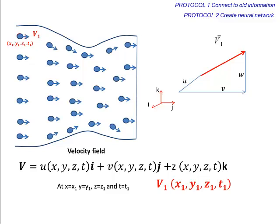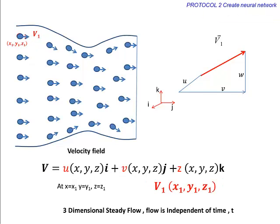In general, fluid motion is a very complex phenomenon and the velocity field is a function of all three space variables and time. Such flows are called 3-dimensional and unsteady. If the velocity field has all three scalar components and is independent of time, it is called 3-dimensional steady flow.